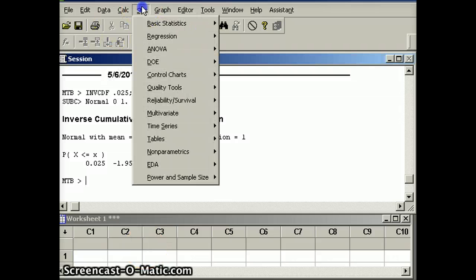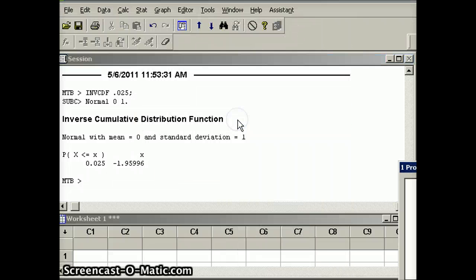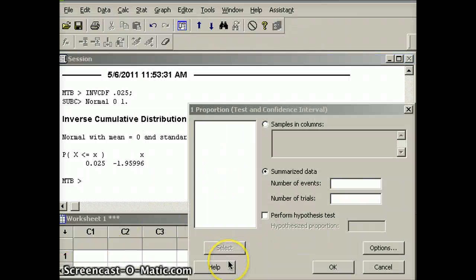We're going to go to the stat menu, then to basic statistics, and then to one proportion. We want to plug those numbers in. We have three buttons here: samples in columns, summarized data, and hypothesis test. We're going to go with summarized data, and we had 610 winners out of a total of 2017.